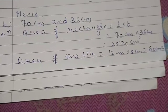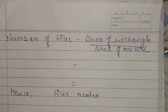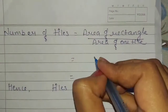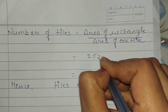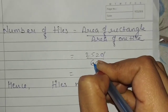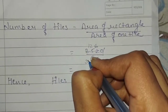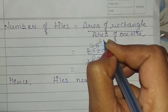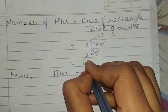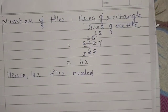Now let us find the number of tiles for the 70 cm by 36 cm region. Number of tiles equals area of rectangle divided by area of one tile. Area of rectangle was 2,520 divided by 60. Simplifying this gives 42 tiles. Hence, 42 tiles are needed.